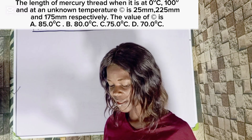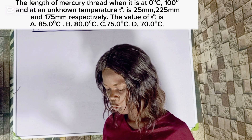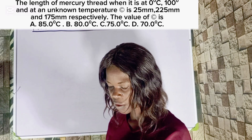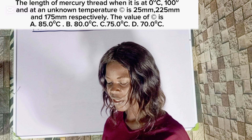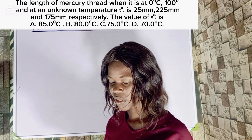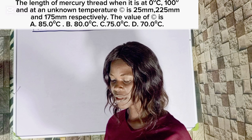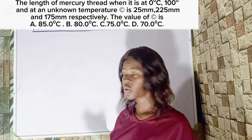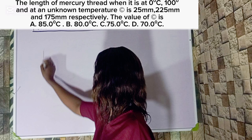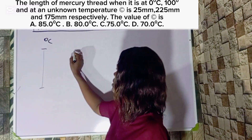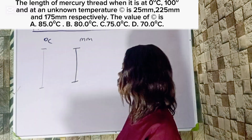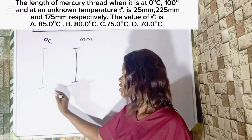The length of the mercury thread at 0 degrees Celsius, 100 degrees Celsius, and unknown temperature theta is 25 millimeters, 225 millimeters, and 175 millimeters respectively. The value of theta is what? Option A: 85°C. Option B: 80.0°C. Option C: 75.0°C. Option D: 70.0°C. This question is under temperature measurement. We have the mercury thread thermometer alongside the Celsius scale thermometer, so let's analyze them.